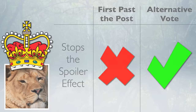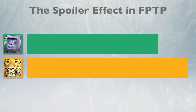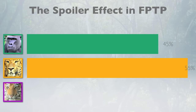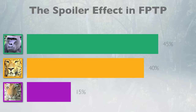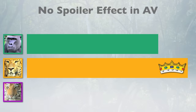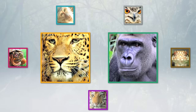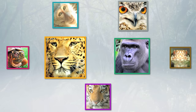Imagine one final election. Two big candidates are running — Gorilla and Leopard — and Leopard looks set to win 55 to 45. But then a third-party candidate, Tiger, enters and convinces 15% of Leopard's voters to back him instead. Under first-past-the-post, Gorilla now wins, even though a majority didn't want him. Under the alternative vote, because all Tiger voters put Leopard as a second choice, Leopard still wins because a majority of citizens would rather have her in charge than Gorilla. Using the alternative vote, citizens can help support and grow smaller parties they agree with, without worrying that they'll put someone they don't like into office.